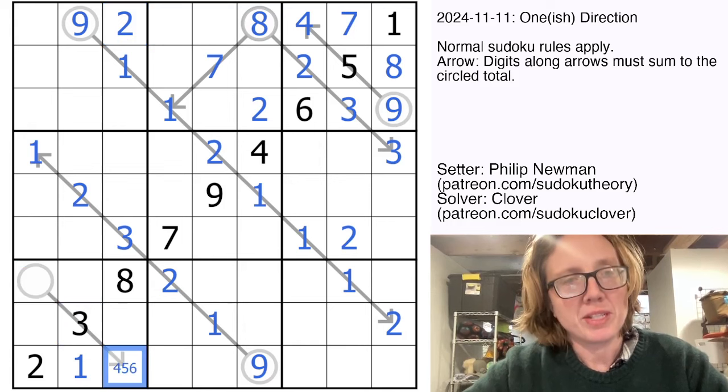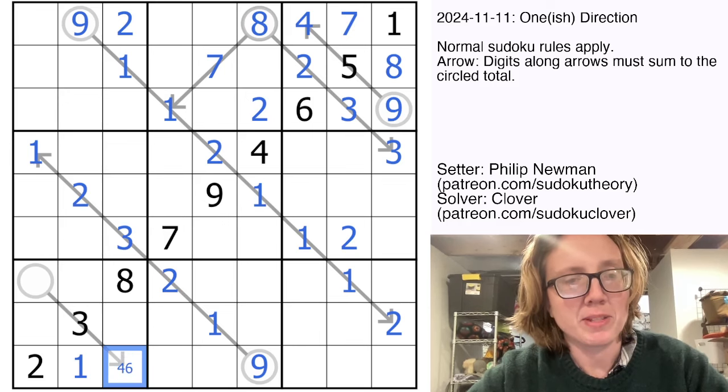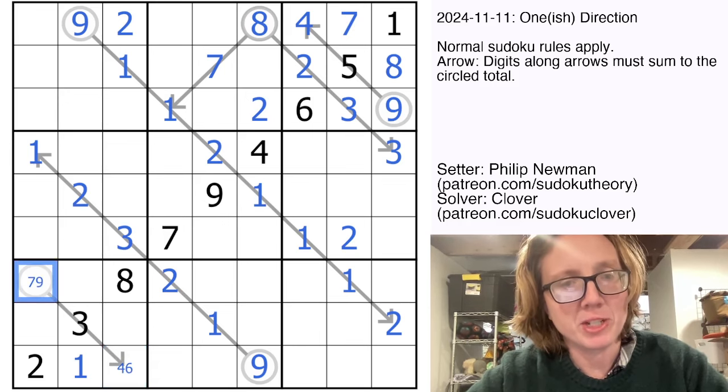So this guy is three plus something. So it's three plus four, five, or six. It can't be three plus five because we already have an eight in the region. So that's going to be three plus four, which is seven, or three plus nine, which is six.